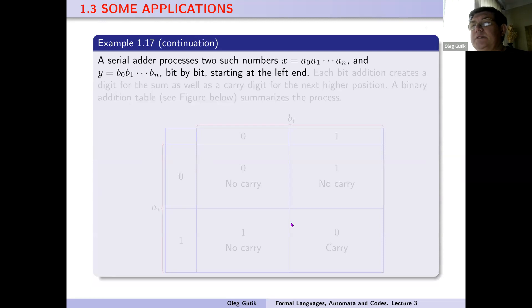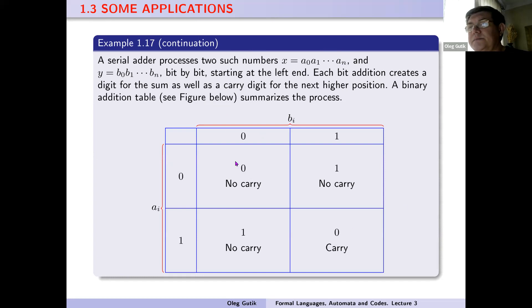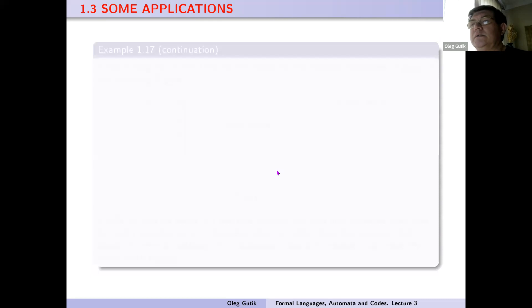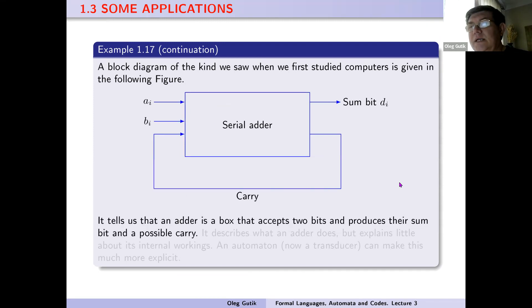A serial adder processes two such numbers x equals a_0 a_1 ... a_n and y equals b_0 b_1 ... b_n bit by bit, starting at the left end. Each bit additionally creates a digit for the sum as well as a carry digit for the next bigger position. The binary addition table, see the figure below, summarizes this process. Here is a block diagram of the kind to be used when the first study of computers is given in the following figure.